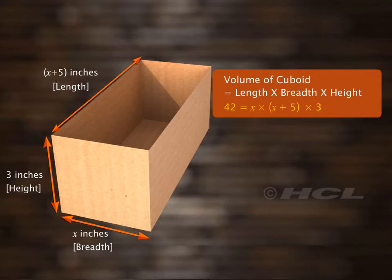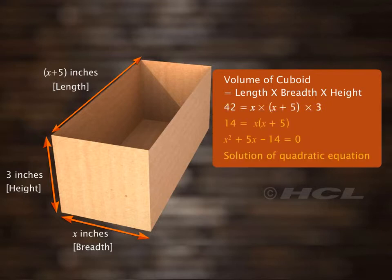On simplifying, we get a quadratic equation, x square plus 5x minus 14 equal to 0. The value of x obtained by solving this equation is the solution of this quadratic equation, or the breadth of the box.